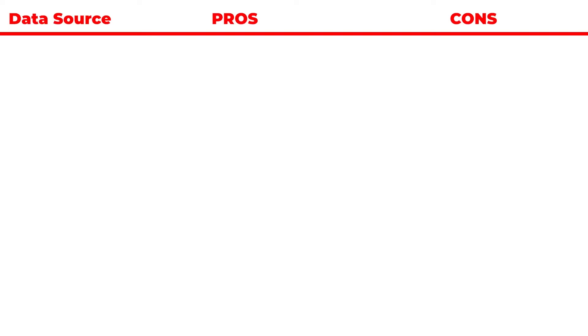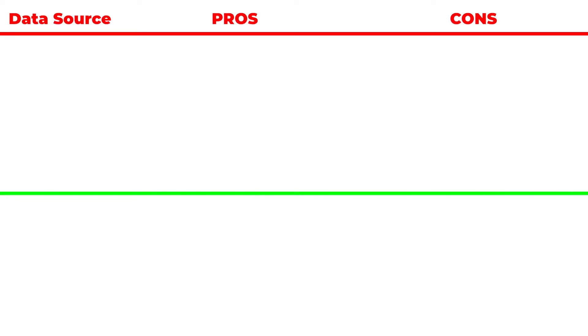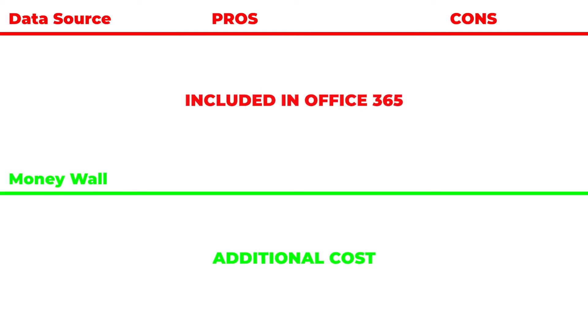To start with, I have a little whiteboard that I'm going to build up here, and it's going to show our data sources and the pros and cons of each. Now, in reality, a lot of this is going to depend on licensing. On this whiteboard, I built a green line — that's our money wall. Anything below that green line, we have to pay additional for. Anything above the green line is included in your Office 365 subscription, so it's not free — you are paying for it with Office — but this is going to be part of your subscription that you're already paying for today.